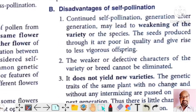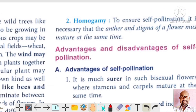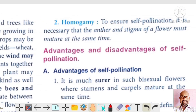The second condition that favors self-pollination is homogamy. In homogamy, both anther and stigma of a flower mature at the same time. So the two conditions necessary for self-pollination are bisexuality — the flower must contain both sexes, male and female — and homogamy, where stigma and anther must mature at the same time.